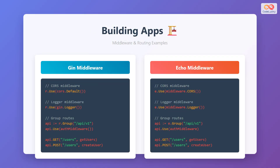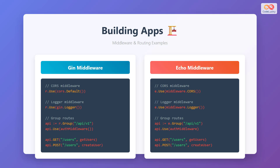Let's examine how to implement middleware and routing in both frameworks through practical examples. In JIN, you can easily add CORS middleware using the CORS default function, which enables cross-origin requests for your API. The logger middleware provides automatic request logging, helping with debugging and monitoring. JIN's group routing feature allows you to organize related routes under a common prefix, such as API version 1, and apply middleware — including authentication — specifically to those routes. The routing syntax is clean and intuitive, making it easy to define GET and POST endpoints for user management.